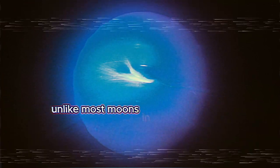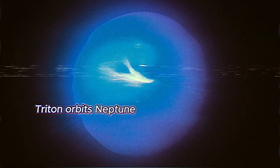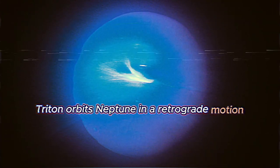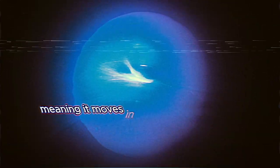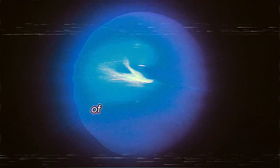Unlike most moons in the solar system, Triton orbits Neptune in a retrograde motion, meaning it moves in the opposite direction of Neptune's rotation.